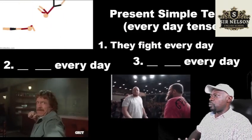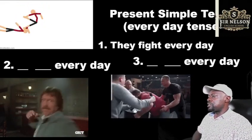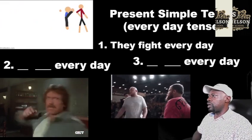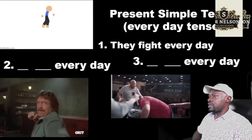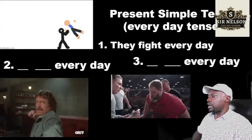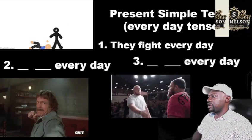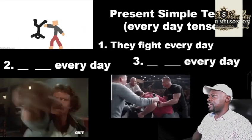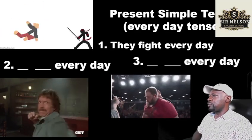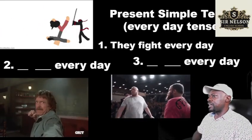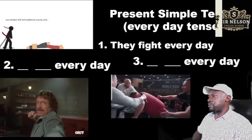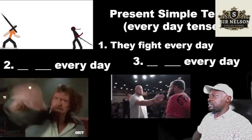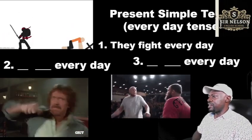Now, we are going to use the present simple tense. The present simple tense is also called the everyday tense. I want you to see the spelling of the word 'everyday.' After 'every,' there is a space, and then you say 'day.' If you remove that space, it becomes an adjective. With the space, this is an adverb. Present simple tense — everyday tense.